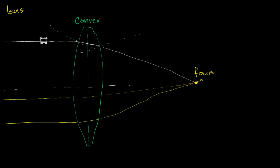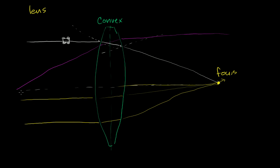This point where all parallel rays converge is the focus of the lens, and the distance from the lens to that point is the focal length. This lens is completely symmetric, so anything coming from one side gets focused on the other side. If collimated rays come from the right side, the same thing happens but focused on the left side. So you actually have two foci for a lens — two points where parallel rays from either side get focused on the opposite side.